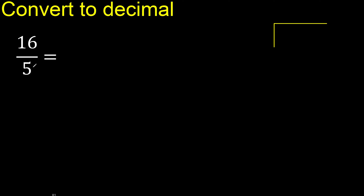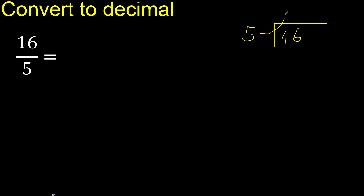16 divided by 5. 16 is not less than 5, so multiply by which number is nearest to 16 but not greater. Multiply by 4 is 20 — 20 is greater. Multiply by 3 is 15 — 15 is not greater, so 3 is our digit.